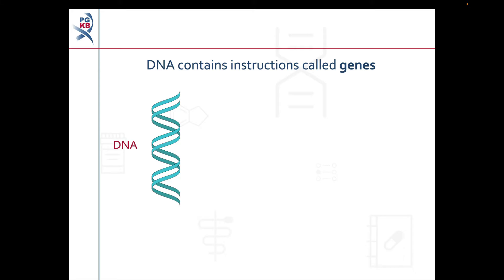On this slide I'm going to go over some simple genetic terms before we move on to some examples of pharmacogenomics in action. Your DNA contains all the instructions to make you. Each one of these instructions is called a gene. You can think of genes as being written in DNA sequence using the letters A, C, G, and T.